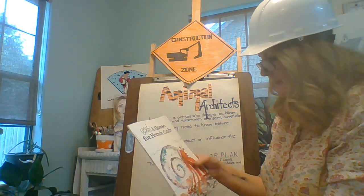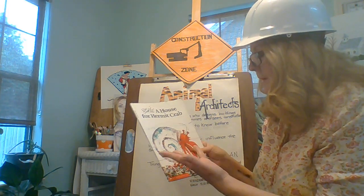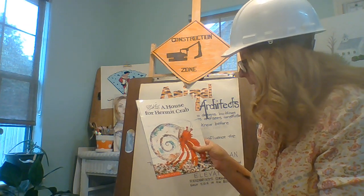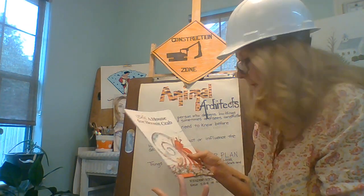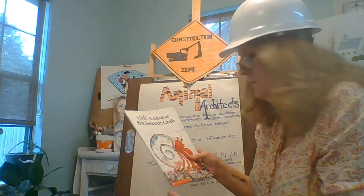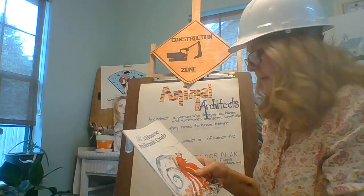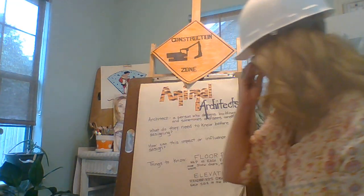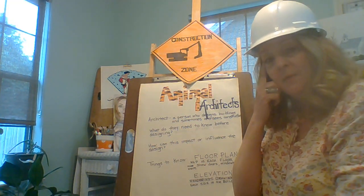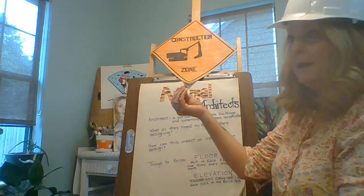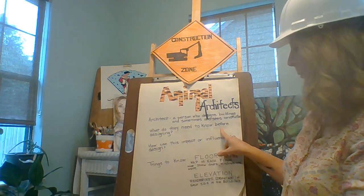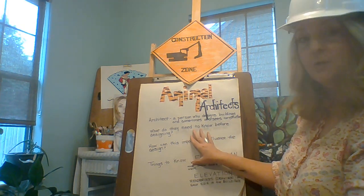So today, like Hermit Crab, we are thinking of a home for an animal. We're going to go through a process. You may pause the video or fast forward through certain parts that are easier for you. Remember the things you have to think about: what animal, where, and what it needs. And how can that influence our design?